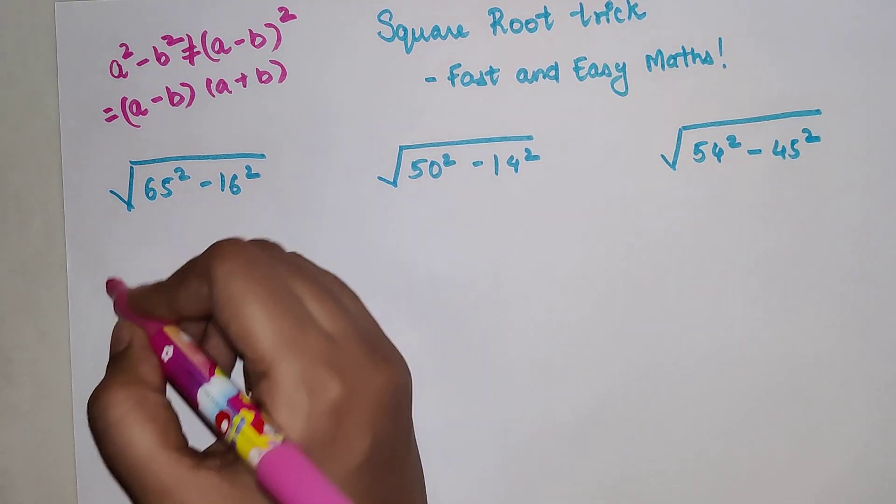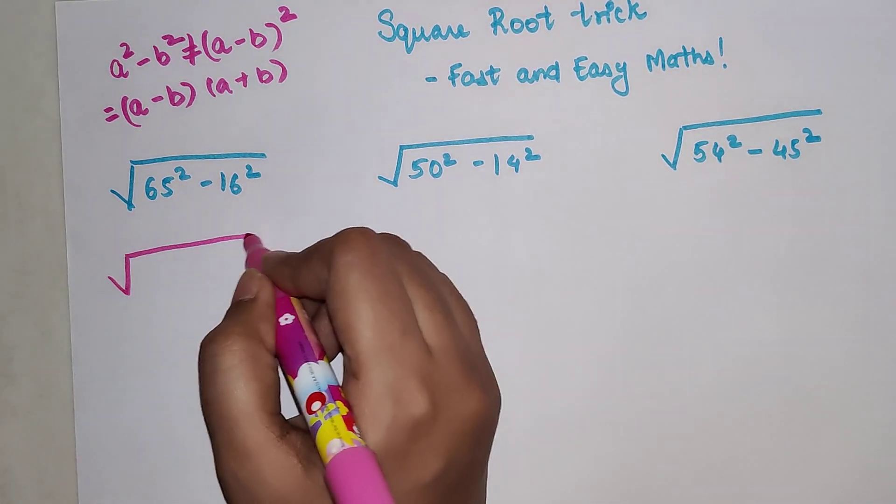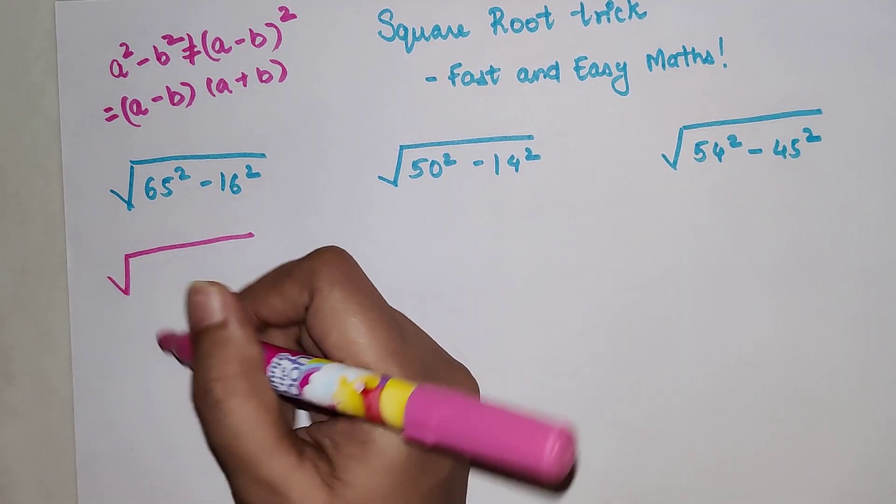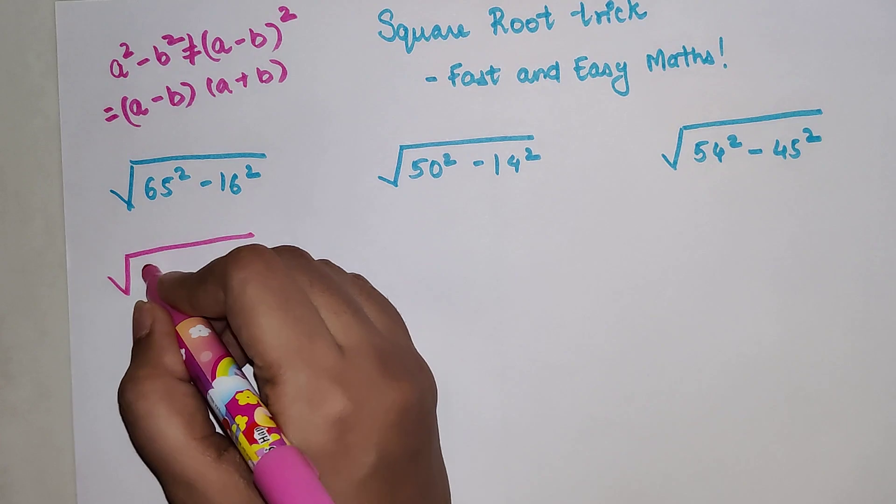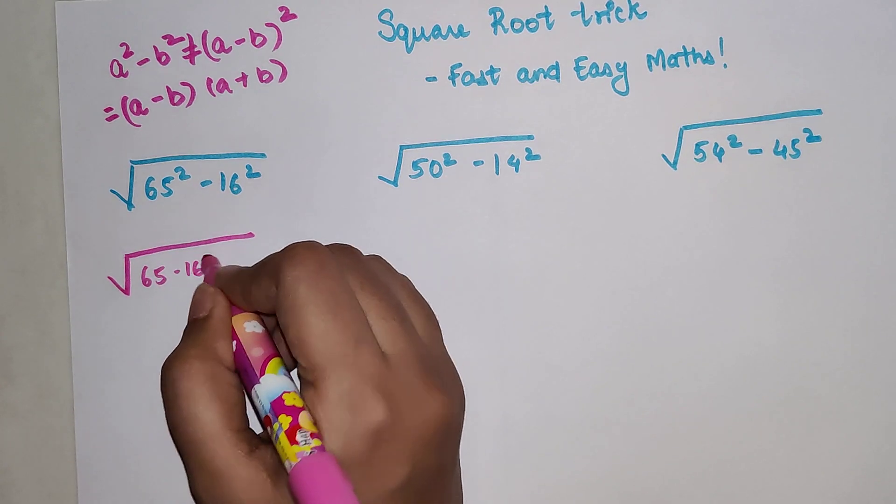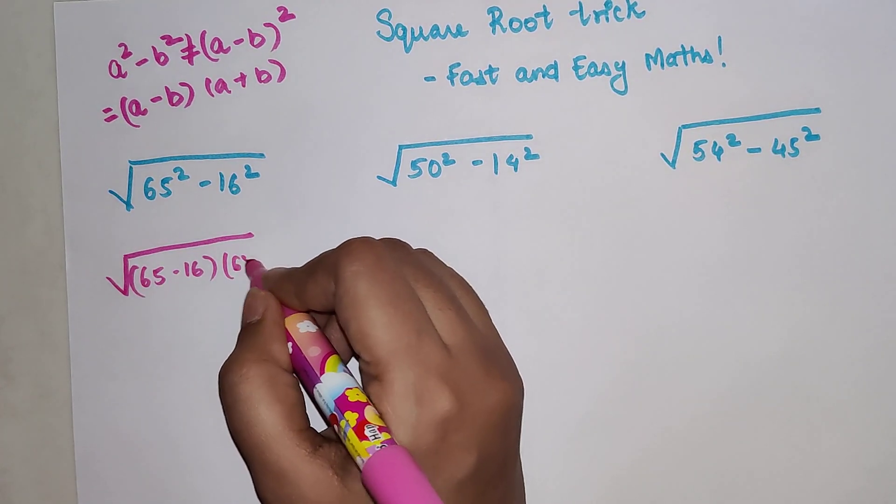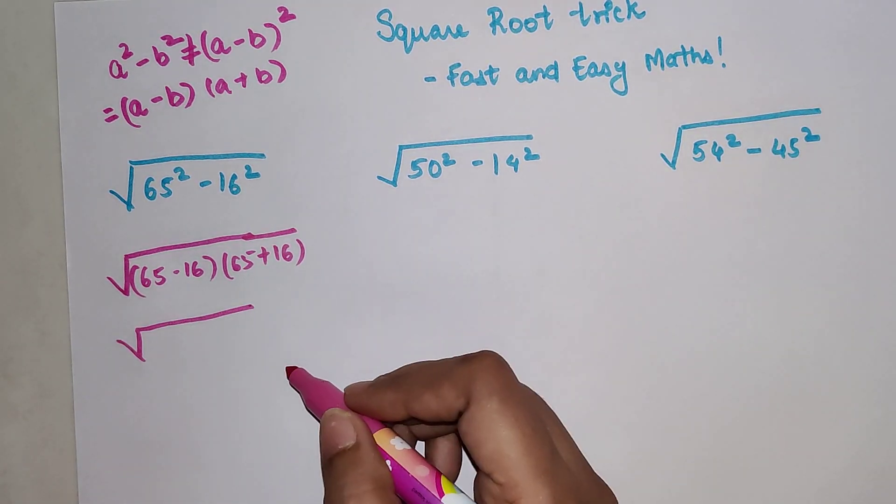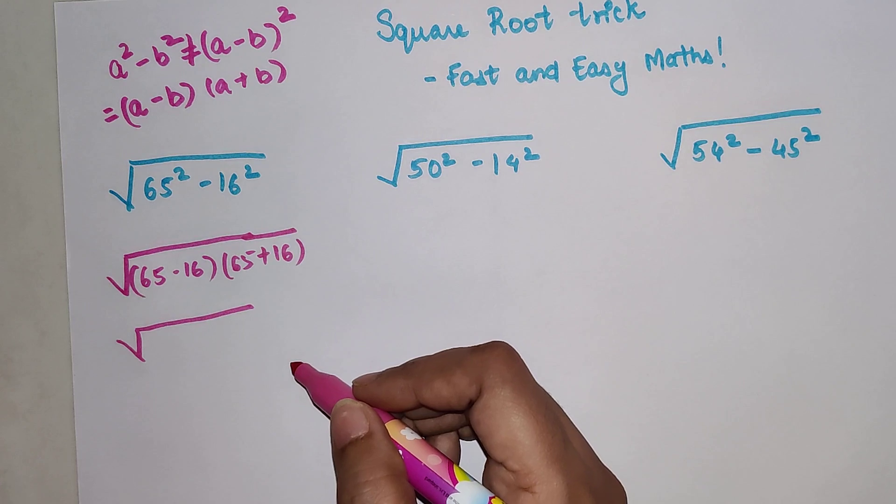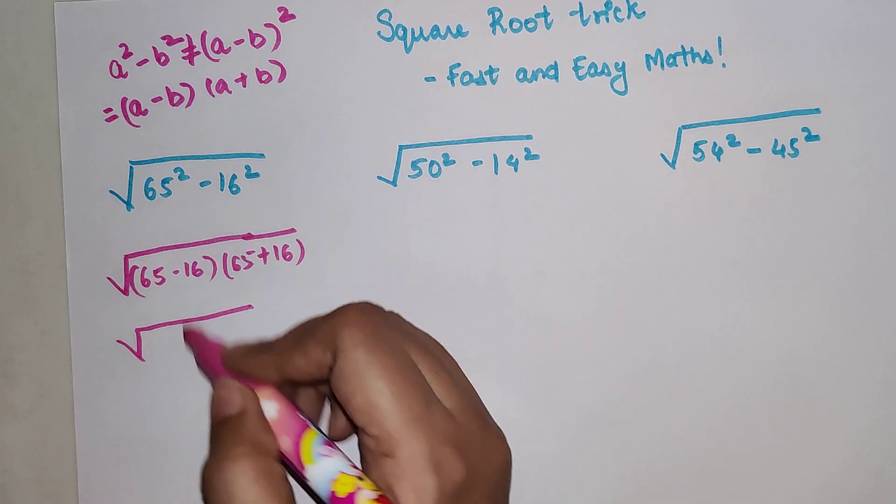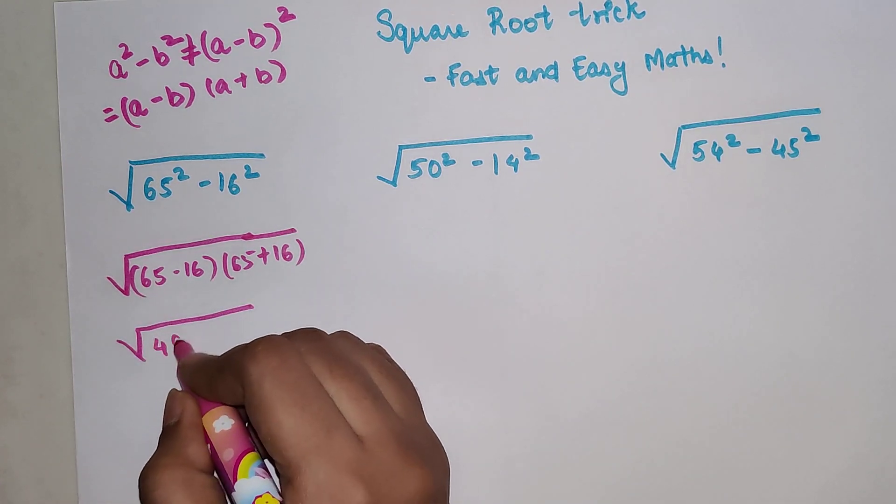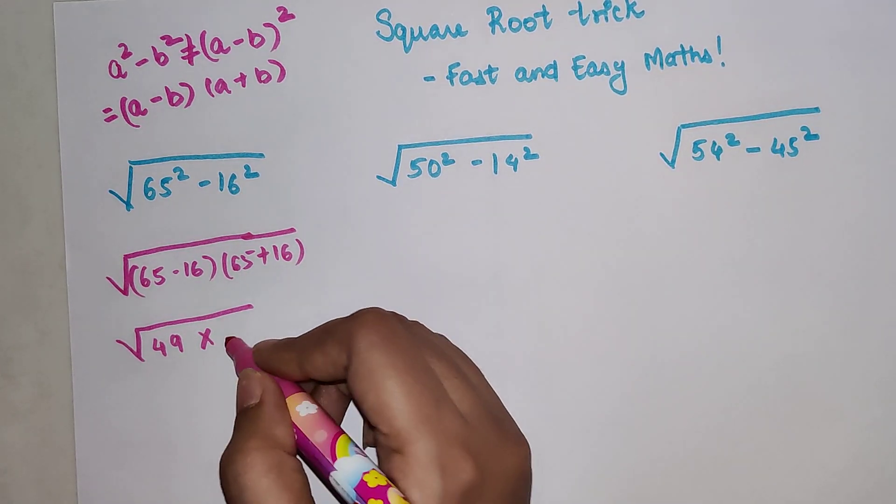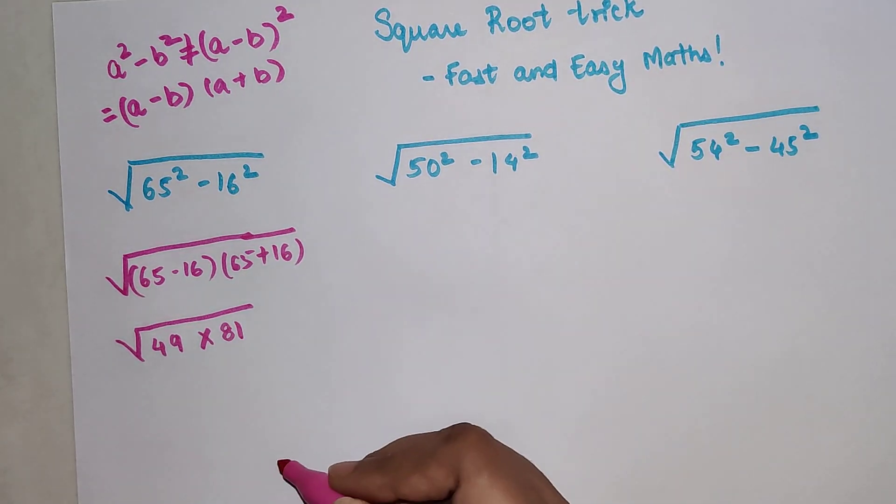For this one, 65² - 16² can be written as (65 - 16) times (65 + 16). This becomes 65 minus 16 gets you 49, and 65 plus 16 gets you 81.